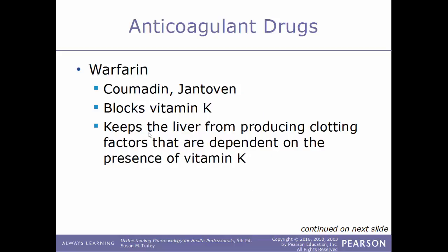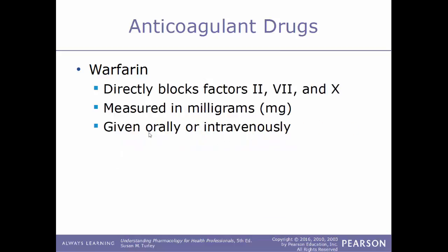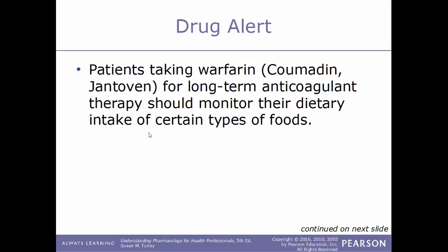Another well-known anticoagulant drug is warfarin, sold under the trade names Coumadin or Jantoven. This drug acts to block vitamin K and also works by keeping the liver from producing clotting factors that are dependent on the presence of vitamin K. Warfarin also directly blocks clotting factors 2, 7, and 10. Warfarin is measured in milligrams and can be given either orally or intravenously.